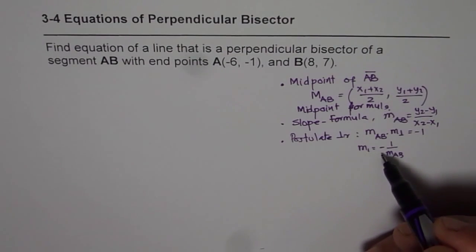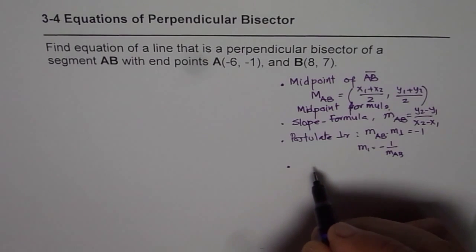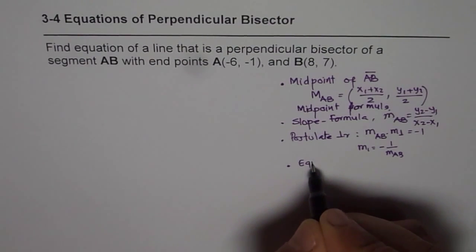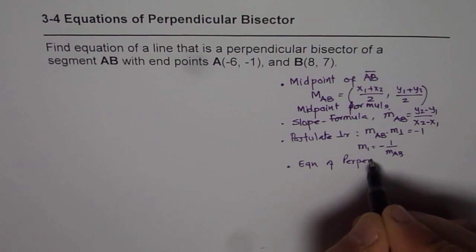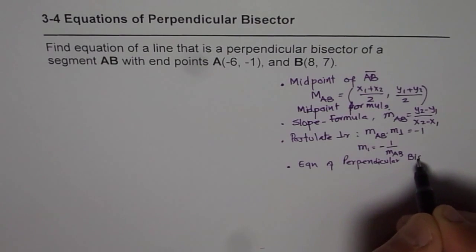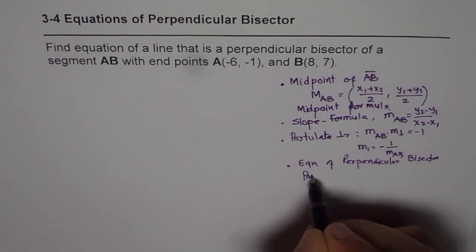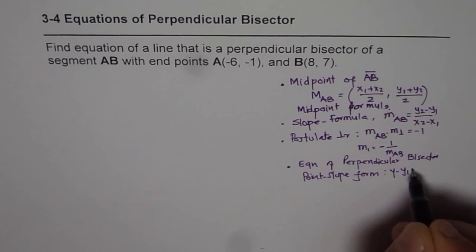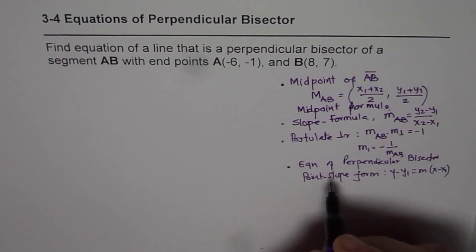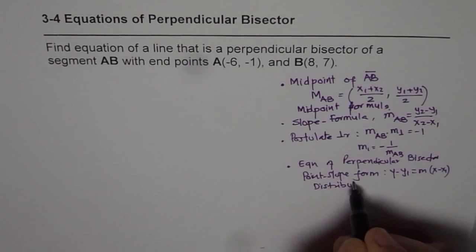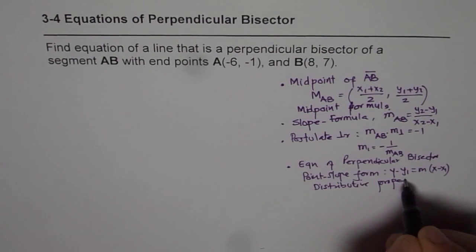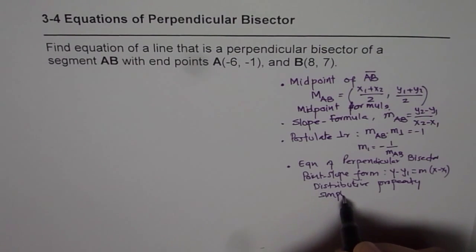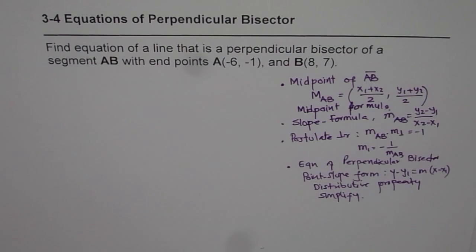Once you know the midpoint and the slope of the perpendicular line, you can use either slope-intercept form of the line, or you can use point-slope form. You can find equation of perpendicular bisector. So we prefer to use point-slope form. So these are the steps which we are going to follow to get the equation of perpendicular bisector.